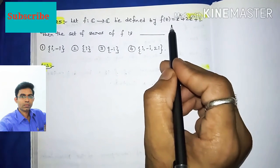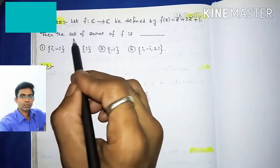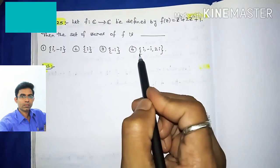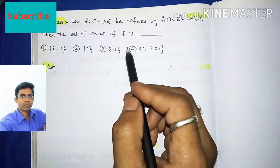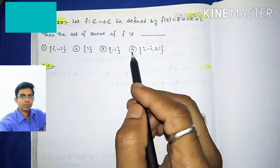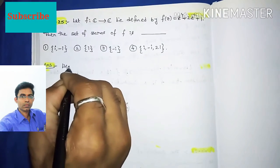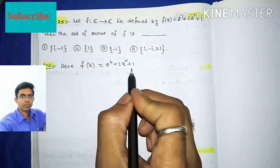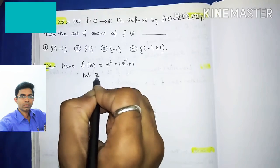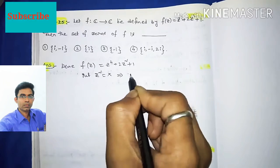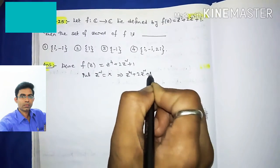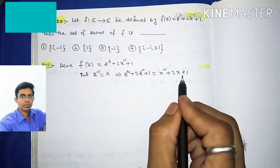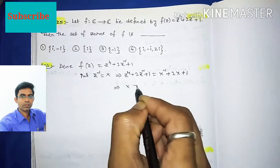Question 25: Let f: ℂ → ℂ be defined by f(z) = z⁴ + 2z² + 1. The set of zeros of f is what? Options: {i, -i}; {i}; {-i}; {i, -i, 2i}. For convenience, substitute x = z², so f becomes x² + 2x + 1.